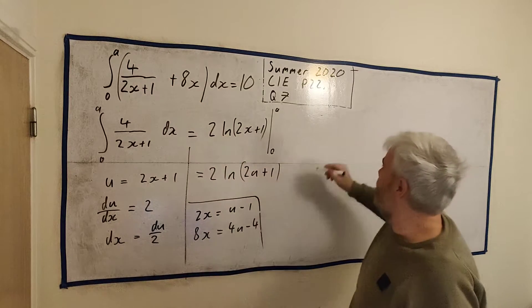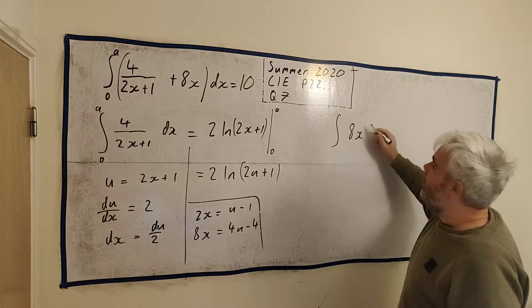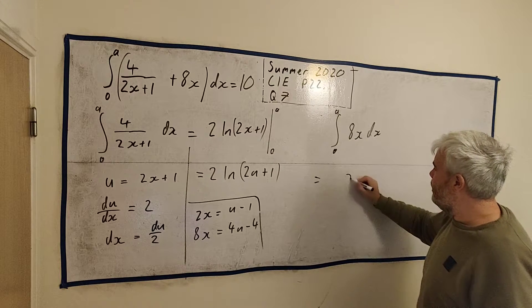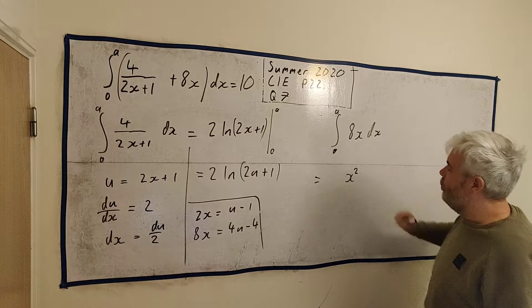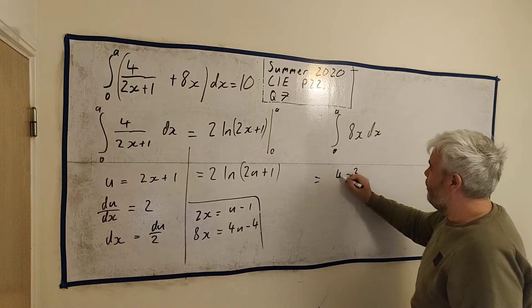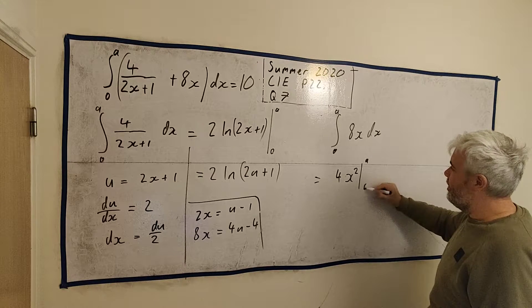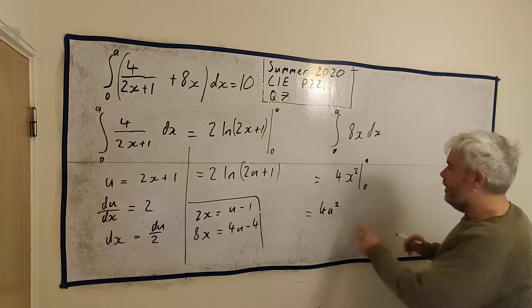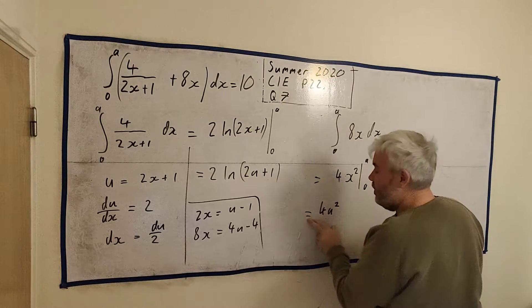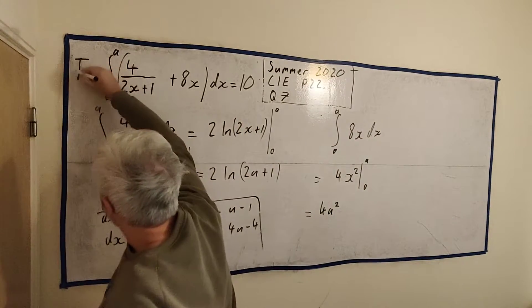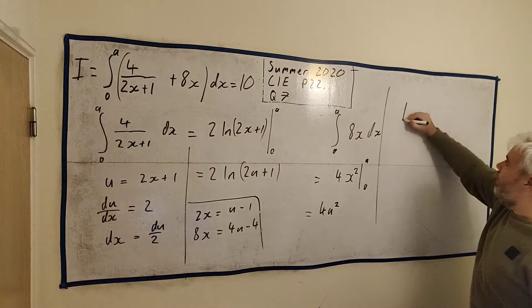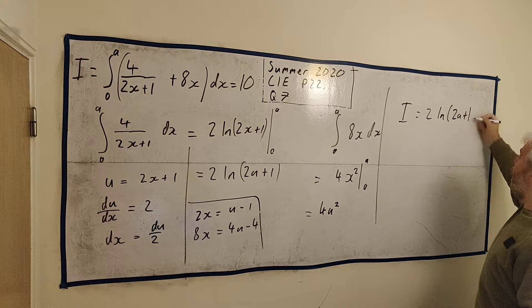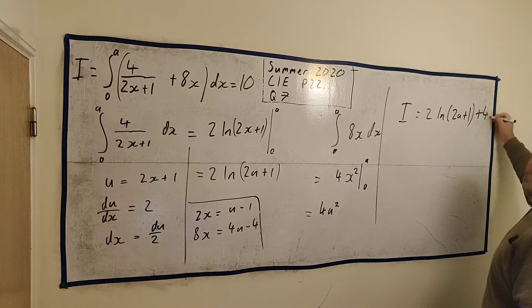And once we've found this one, we now just move on and do the next one. Let me make a bit of room here. The integral of 8x dx between 0 and a is simply, we get an x to 1 power higher, that's 2, and then we divide by 2. So 8 divided by 2 is 4. And that's it. That's between a and 0. So we put in a, we get 4a squared minus, put 0 in, we get 0 again.